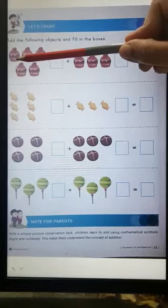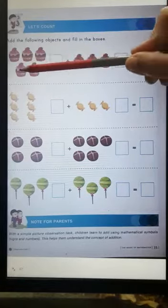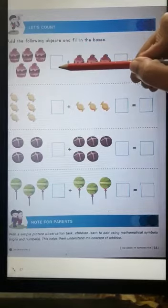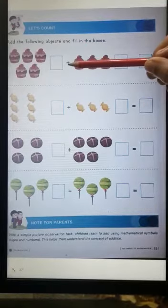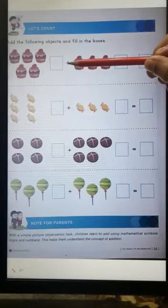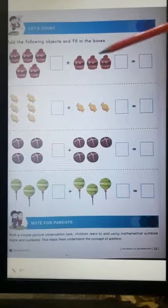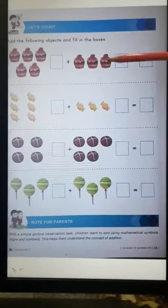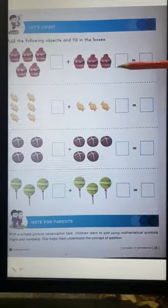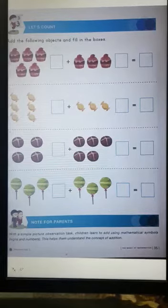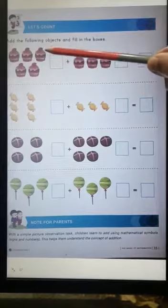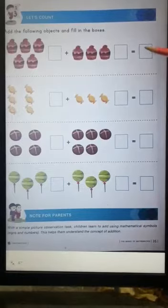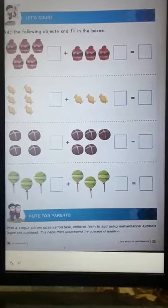Let's count the cupcakes. 1, 2, 3, 4, 5. So I will write 5 in the given box. Beautifully. Then it's a sign of addition - plus. What do we call it? Plus, because we are adding two things together. 1, 2, 3. So here you will write 3. Is equal to. Let's count the total now. 1, 2, 3, 4, 5, 6, 7, 8. So here I will write 8. There are 8 cupcakes in total.